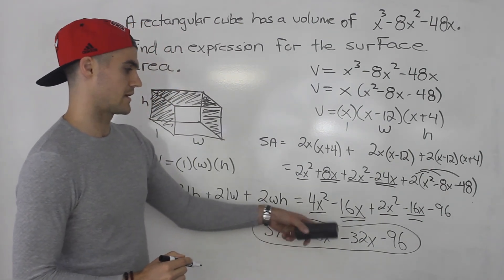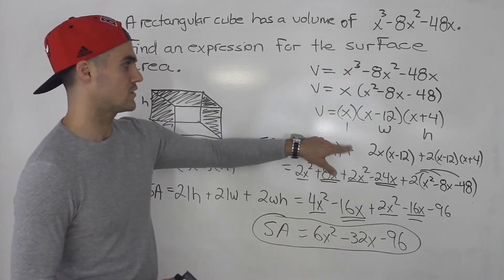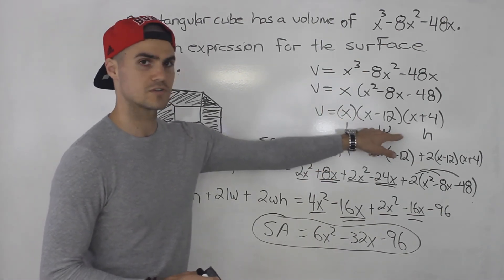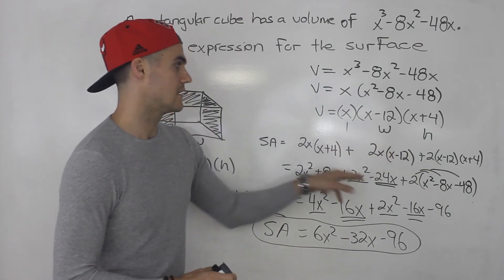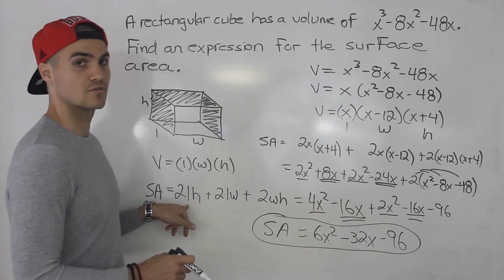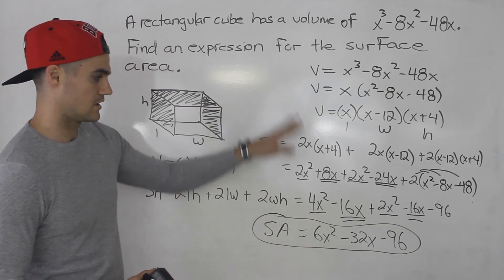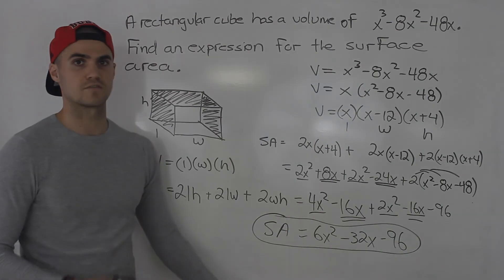6x squared minus 32x minus 96. So we had to take the volume expression, factor it first, and then got three terms. That's the length, width, and height. Then we took that length, width, and height, plugged it into the general surface area formula for a cube up here, simplified everything. That's the final answer.